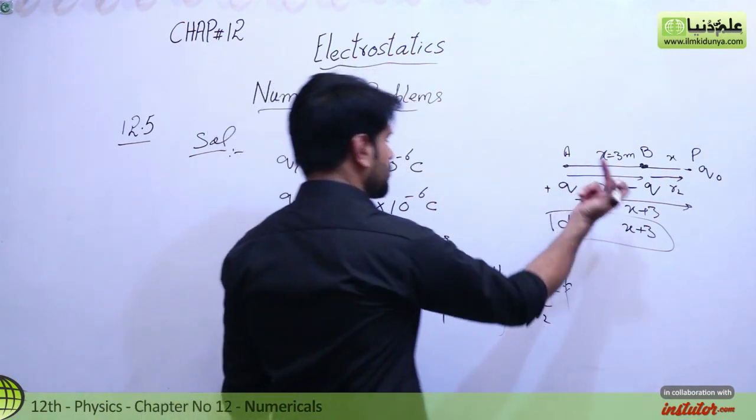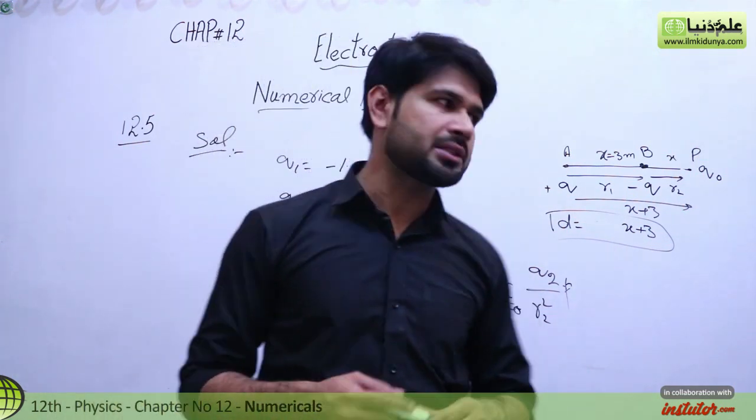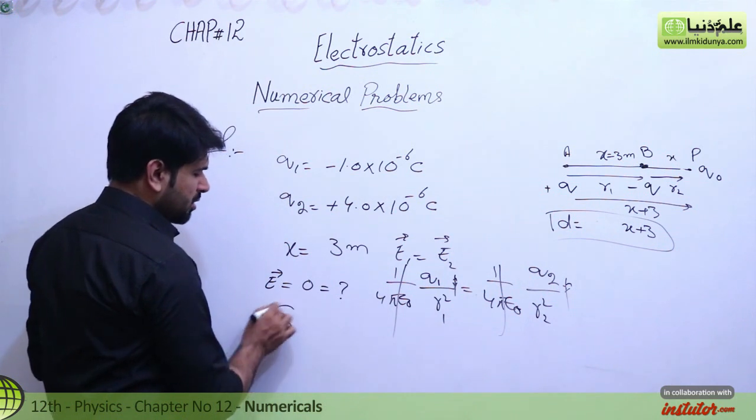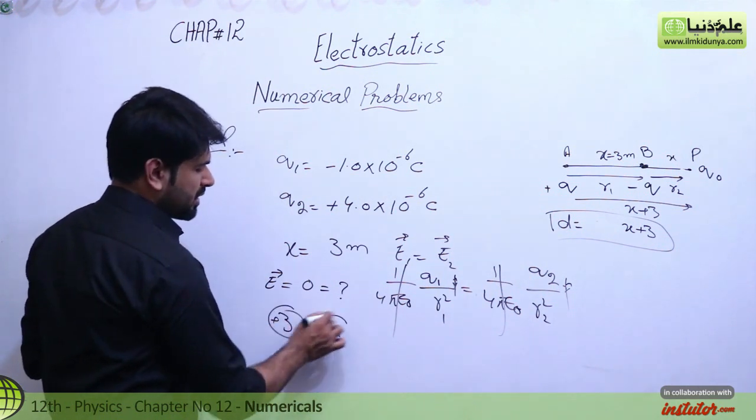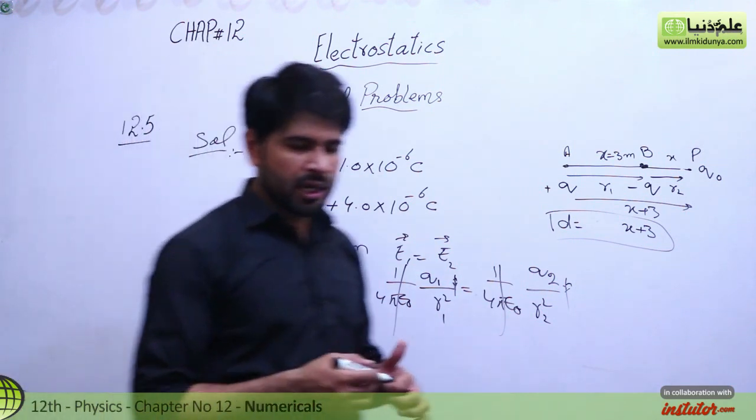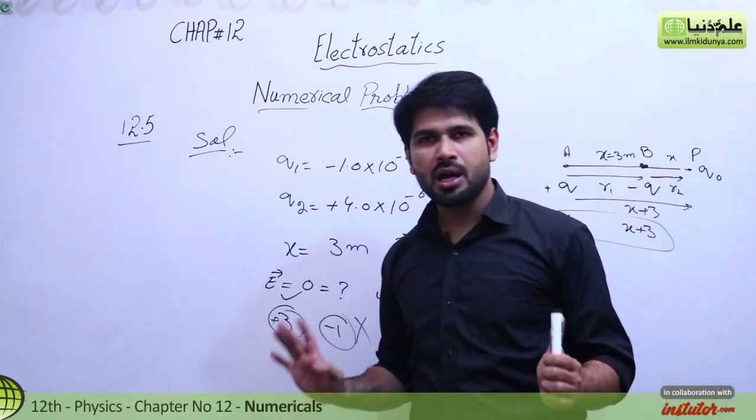You have to put the values and solve. We will get the distance which is 3 meters. The plus value will come and we have minus 1 which will be neglected. We get the value of d and this will be the correct answer. We have done this before, 100%, so 3 meters will be the answer.